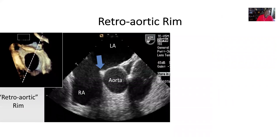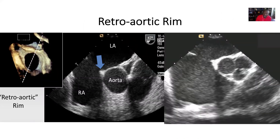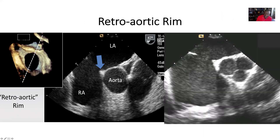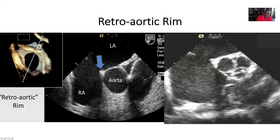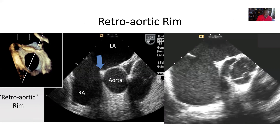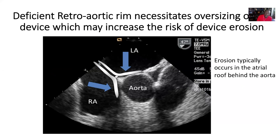The retro-aortic rim is the most common site of deficiency. Most times these defects can still be closed. Here we have an ASD with a really small retro-aortic rim — it's around five millimeters, really bordering on being deficient. This is commonly seen in practice and they are successfully closed with transcatheter techniques. However, when you do have a deficient retro-aortic rim, you have to oversize the device, and that may lead to increased risk of device erosion. Erosion will typically occur on the atrial roof behind the aorta, so one has to really watch out for this and patients have to be followed clinically.